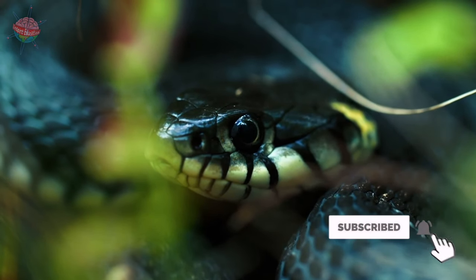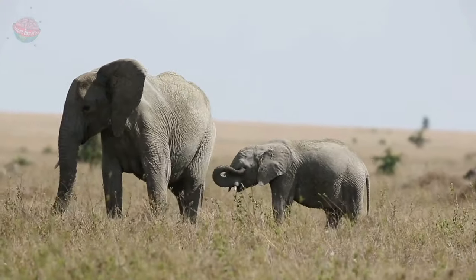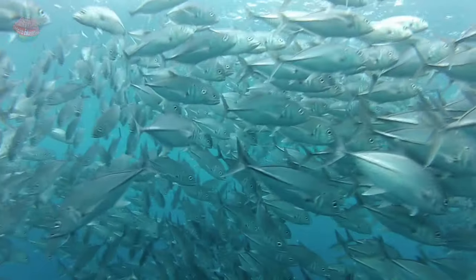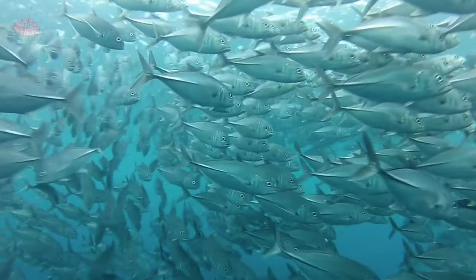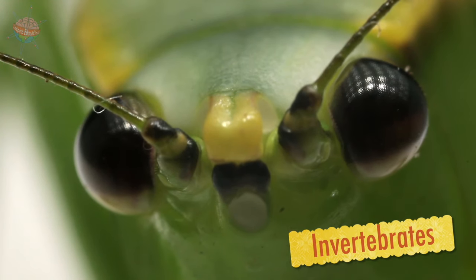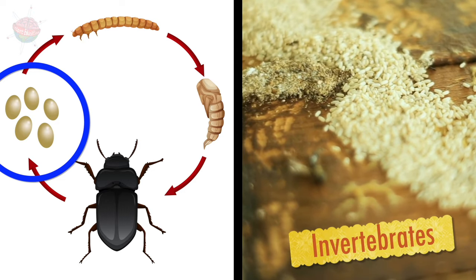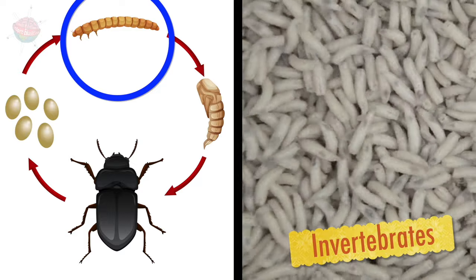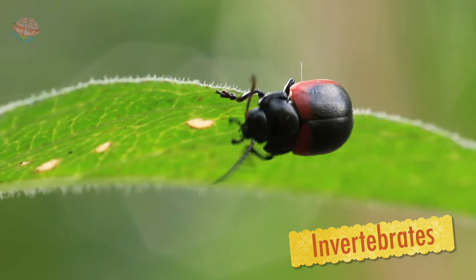There are six basic animal groups, and each experiences a different life cycle. There are many different species of invertebrate, but they all begin life as an egg. Then they hatch into larva, develop into a pupa, and grow into an adult.